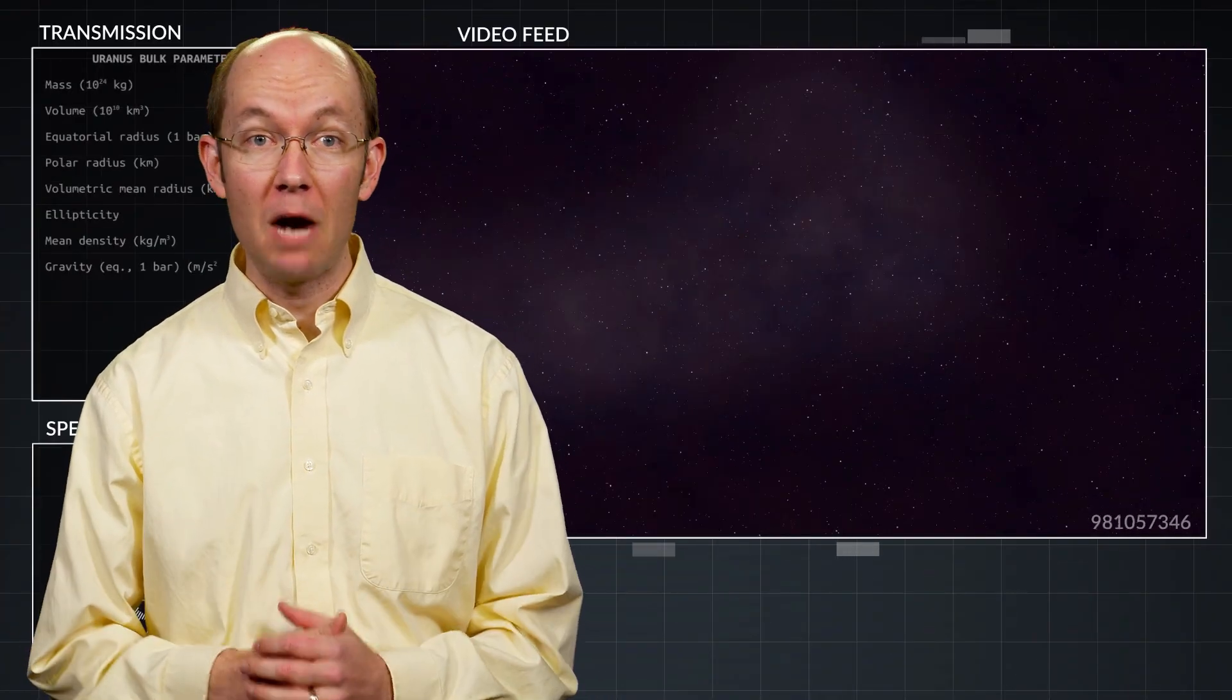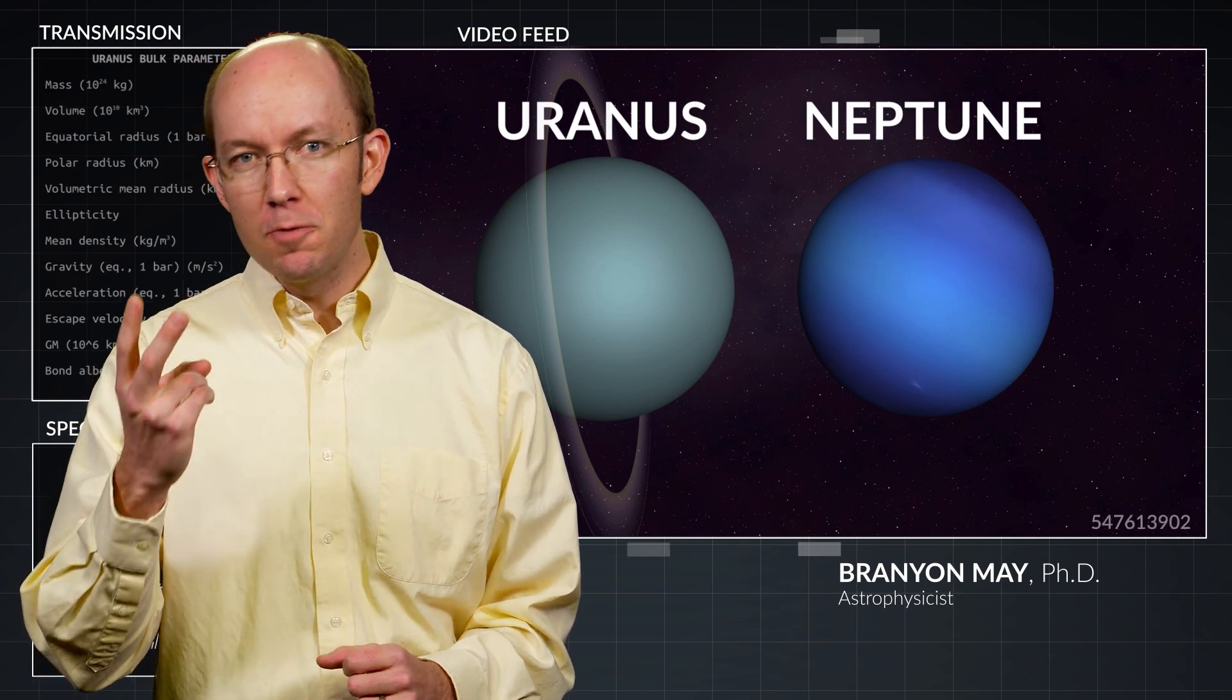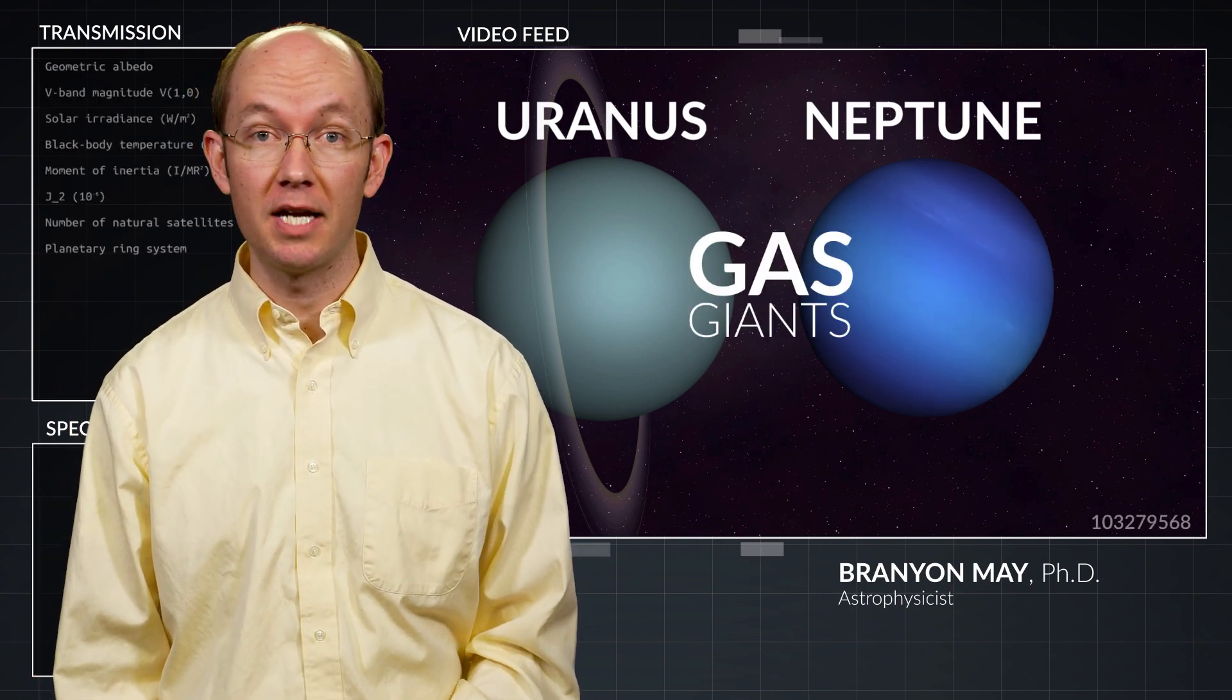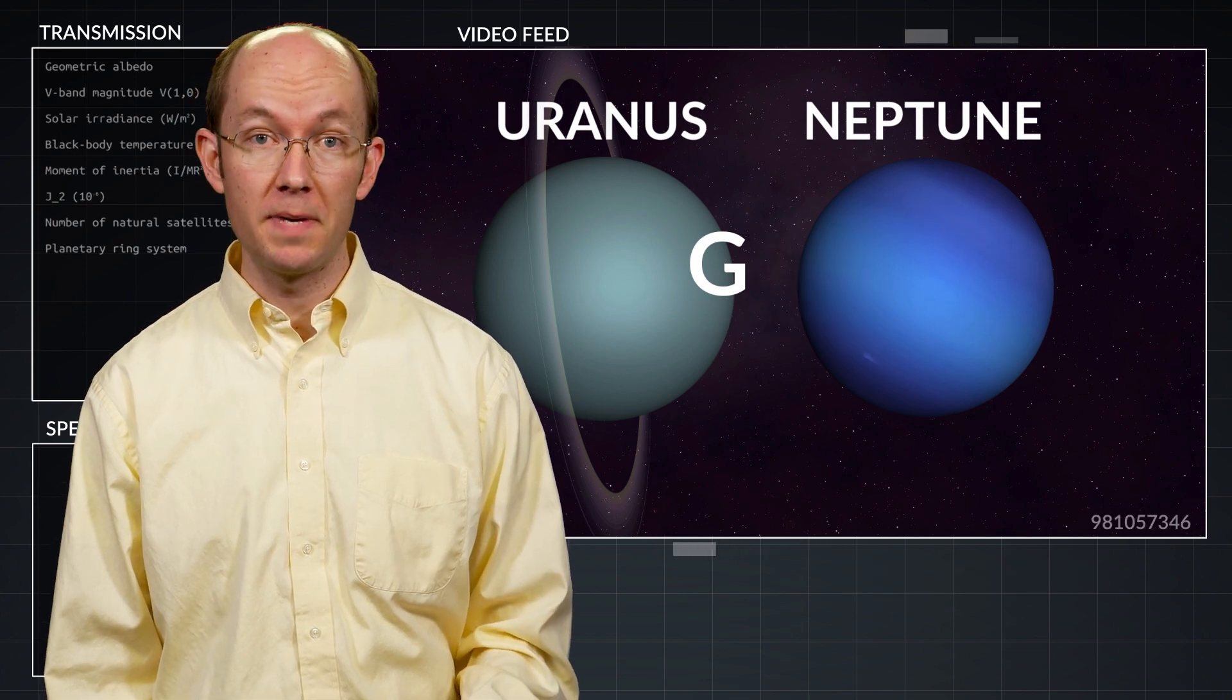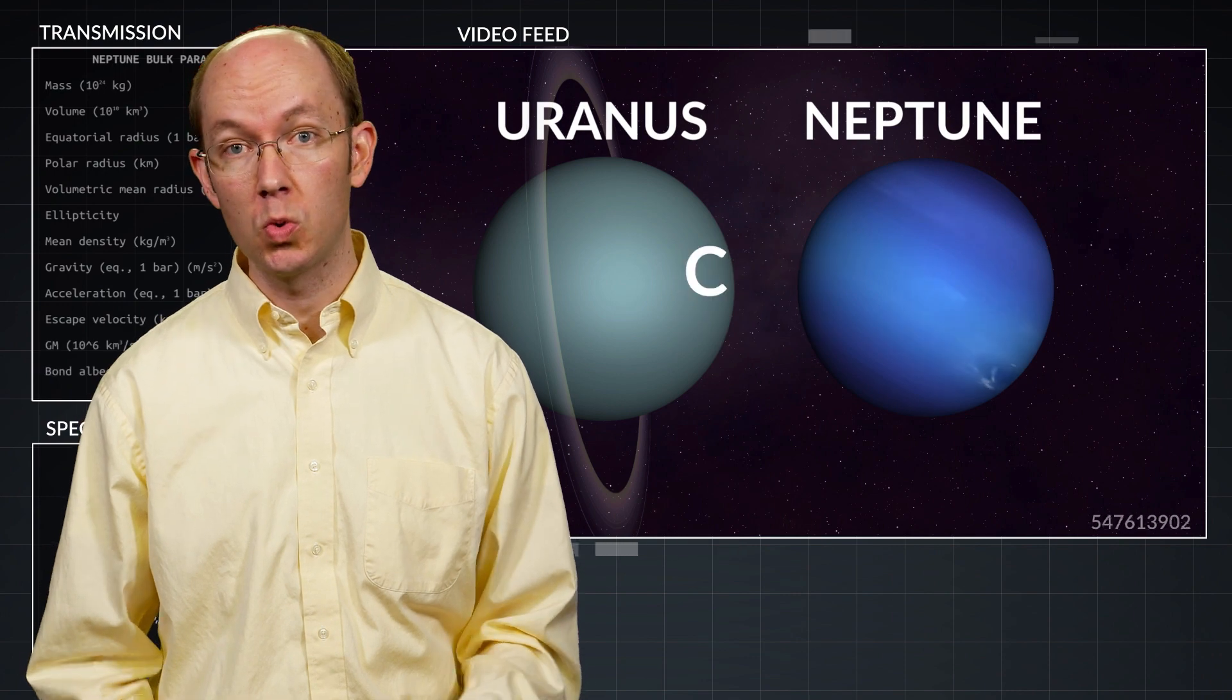The last two planets in our outer solar system are Uranus and Neptune. These two planets are very similar. Both planets are classified as gas giants. They have similar overall appearances, have many moons, faint rings, and are very cold.